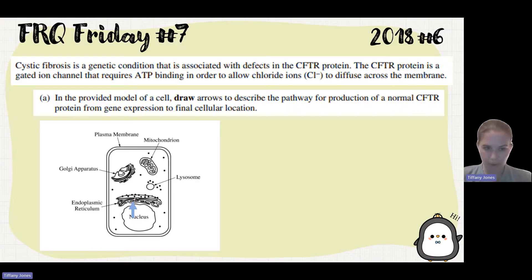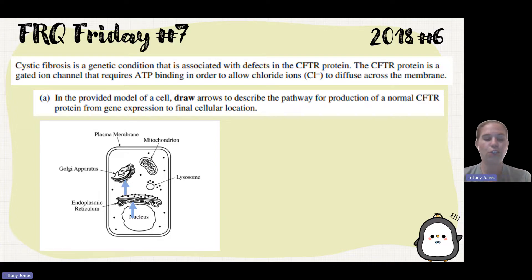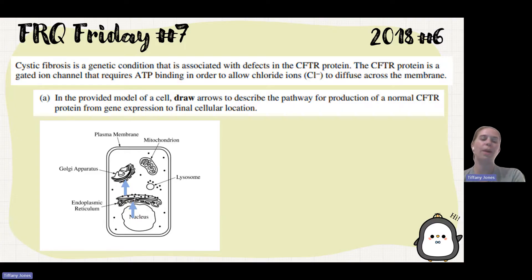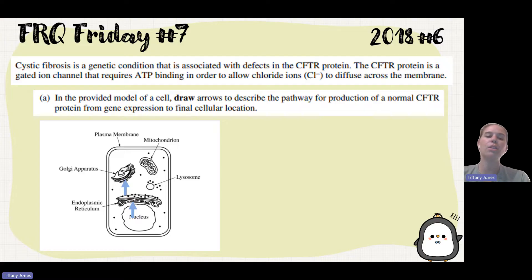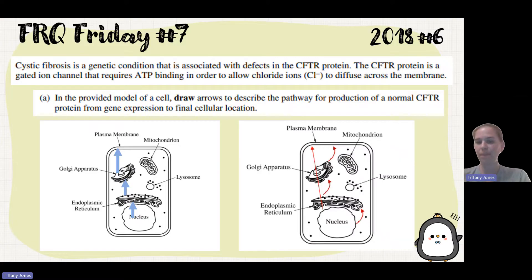After we synthesize our protein at the rough ER, we're going to send it to the Golgi bodies to be packaged and modified, so you should see an arrow going to the Golgi. Then, because this protein is going to end up in the membrane as a gated channel, after the Golgi apparatus it goes to the plasma membrane. So we should have three arrows: nucleus → rough ER → Golgi → plasma membrane. That is what we see in our diagram. You could draw it as a straight line or as three separate arrows to each organelle.